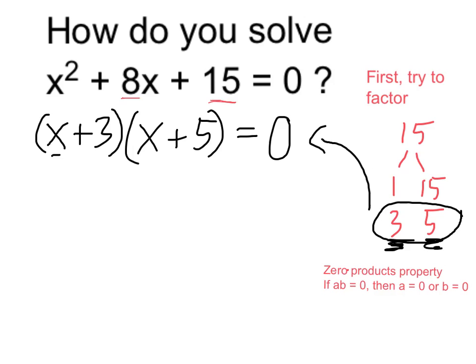So if x plus 3 is 0, then x has to equal negative 3. Negative 3 plus 3 is 0.